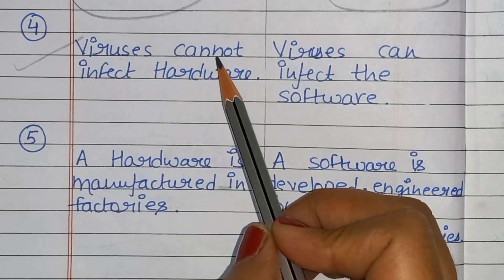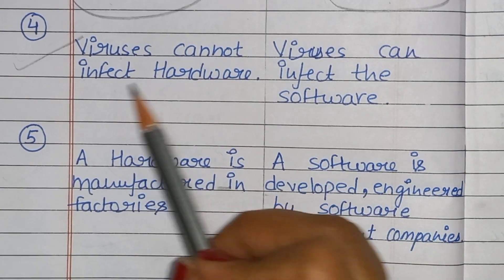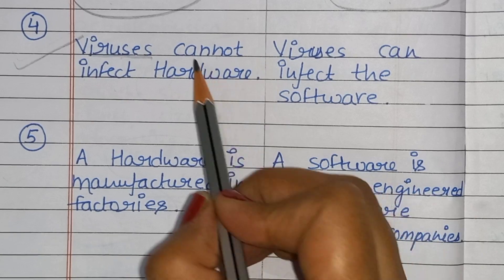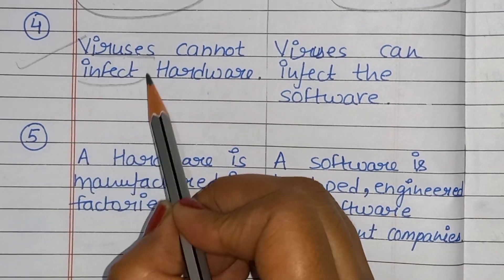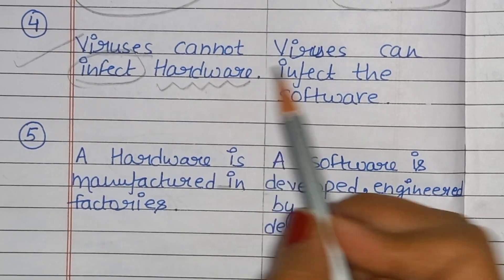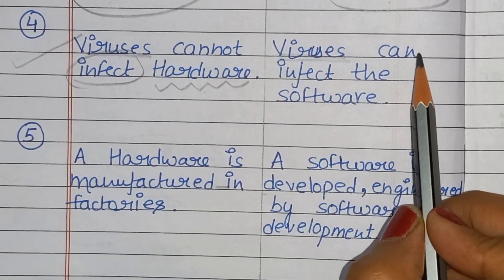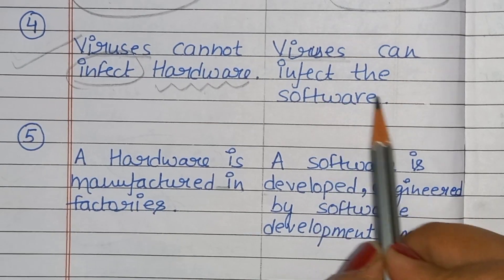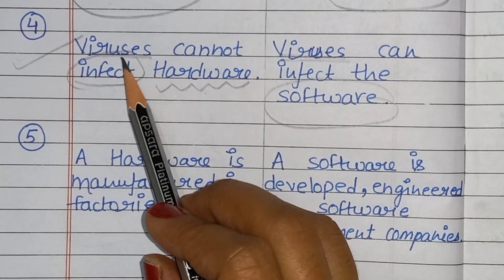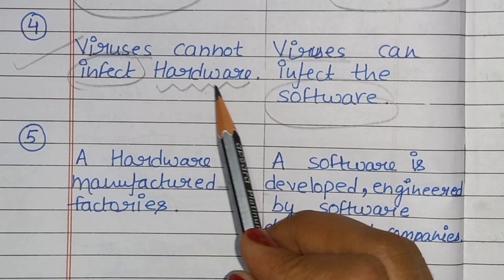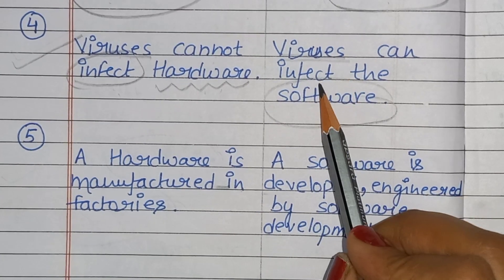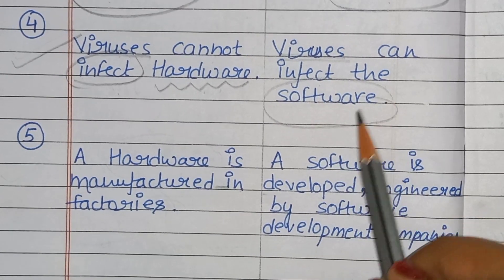Next difference: virus can't infect hardware. Virus jo hota hai, woh infect nahi karta hardware ko. Lekin jo viruses hote hai, woh infect karta hai software ko. Virus can't infect hardware, but virus infects the software.